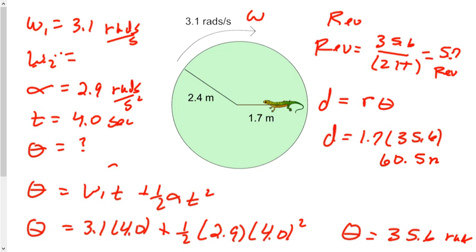And one last thing. What if I want to know the linear acceleration of the lizard? Well, a is equal to r alpha. Alpha being the 2.9, and again, the radius is 1.7. So acceleration is 1.7, and we'll multiply that by 2.9. And that equals 4.93, and that's going to be meters per second squared.